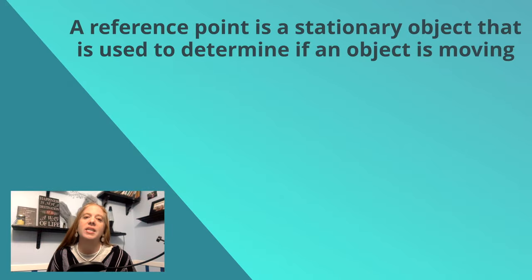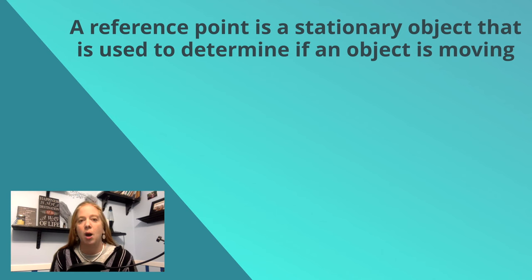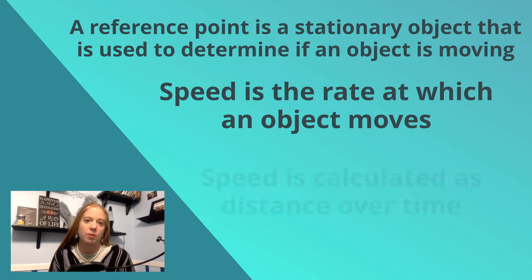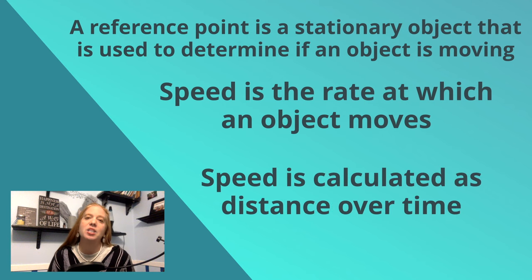A reference point is a stationary object that is used to determine if an object is moving. Speed is the rate at which an object moves. Speed is calculated as distance over time.